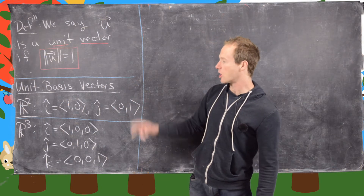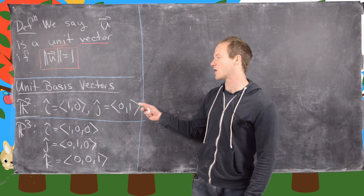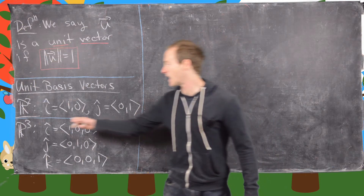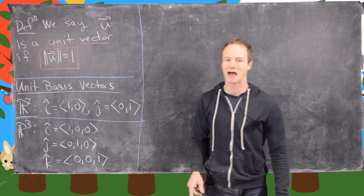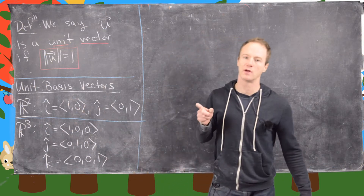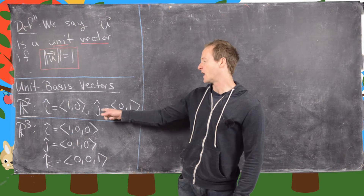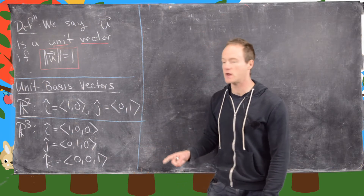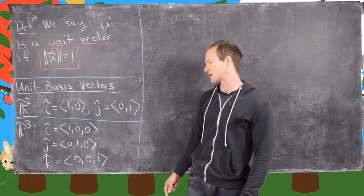In R2 there are two very important unit vectors called the unit basis vectors. They are i-hat, which is the vector (1, 0) — pointing one unit in the direction of the x-axis — and j-hat, which is (0, 1), pointing one unit in the direction of the y-axis.